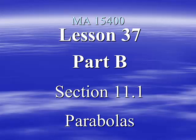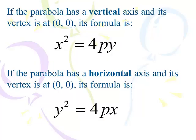Here we go, lesson 37, part B. This is our second part of section 11.1 parabolas, and this wraps up our discussion. Just to review again, a parabola has a vertical axis with the base formula x squared equals 4py, meaning it either opens up or down. A parabola with a horizontal axis has a base formula of y squared equals 4px, opening right or left.